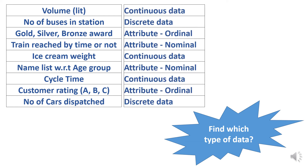Let's look at some examples. Volume — we can convert liter to liter, so volume is continuous data. Number of buses in a station — it's just a count, so that is discrete data. Gold, silver, bronze — order is important, so that is ordinal data. Train reached on time or not — this is just a yes or no, so that is nominal data. Ice cream weight — weight we can convert, so that is continuous data.